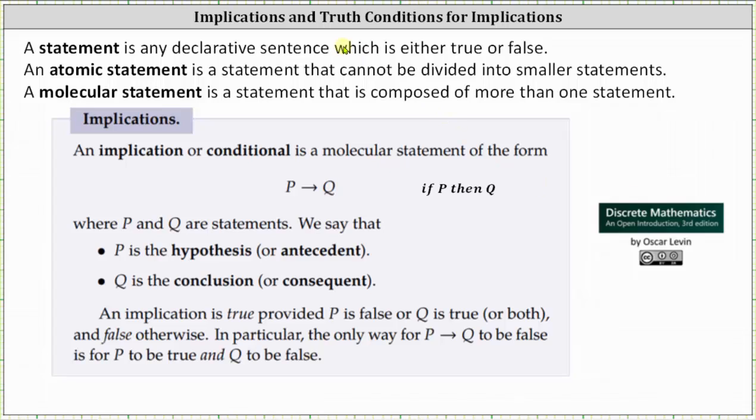Welcome to a lesson on Implications and Truth Conditions for Implications. An implication or conditional is a molecular statement of the form if P then Q, where P and Q are statements. We say that P is the hypothesis or antecedent, and Q is the conclusion or consequent.